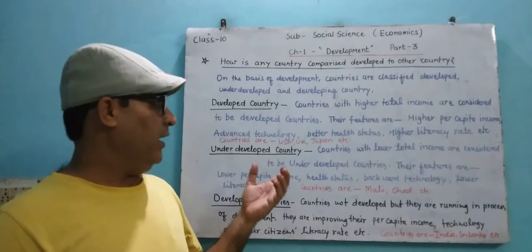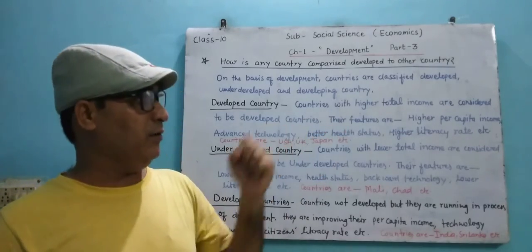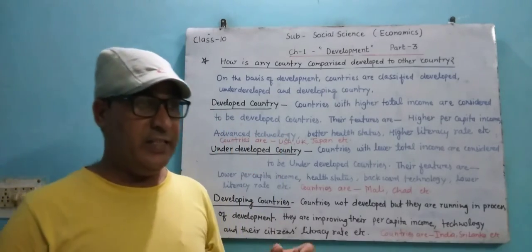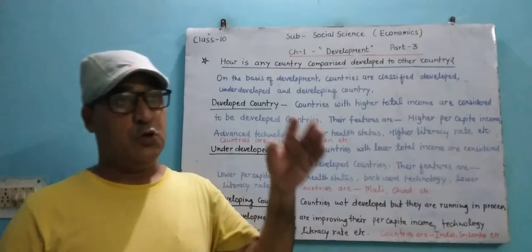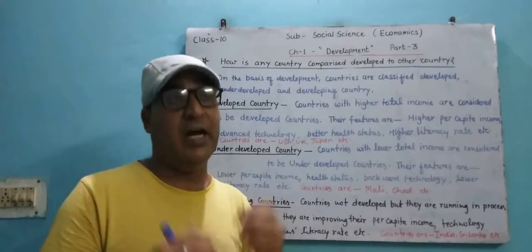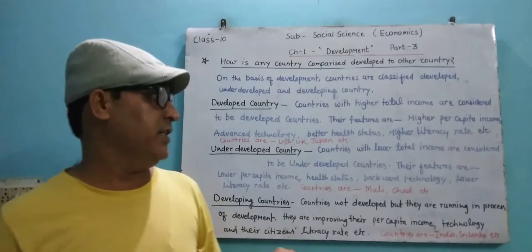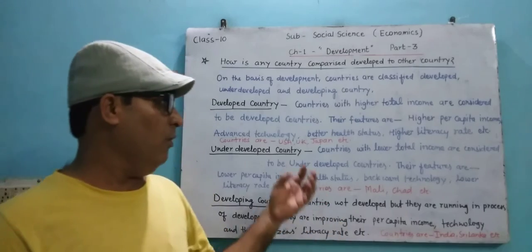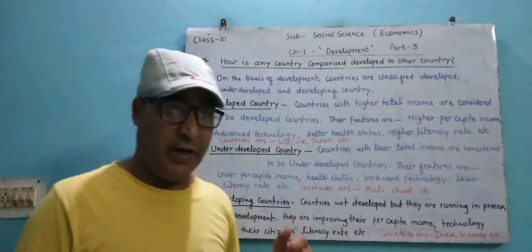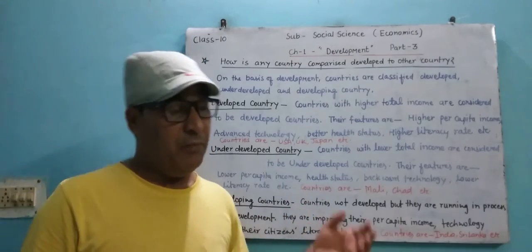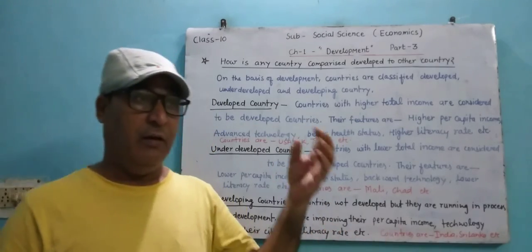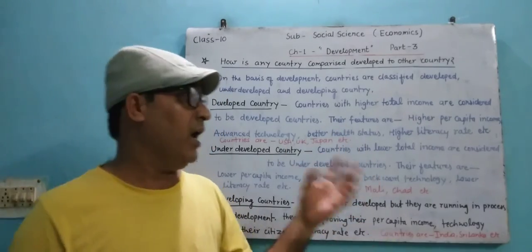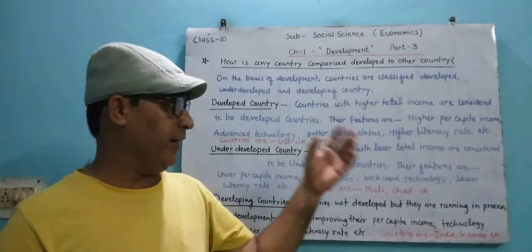Developed countries are those countries with higher total income. Their features include higher per capita income — per capita income meaning the income of the citizens of the country — which is higher in developed countries.